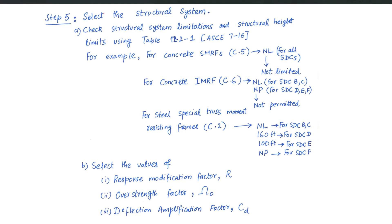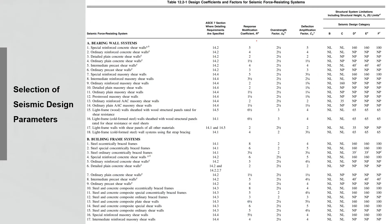The next step is the selection of the structural system, or actually checking whether the structural system you initially intended for your building is permitted or not permitted by the code in your seismic design category. You will go to Table 12.2-1 in ASCE 7-16 and check whether the structural system you want to construct is permitted by the building code in that particular seismic design category. Let me go directly to that table.